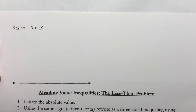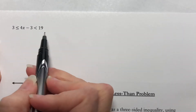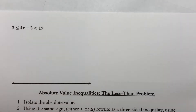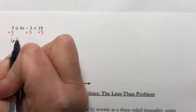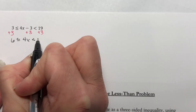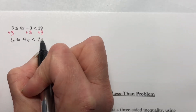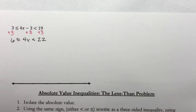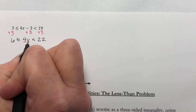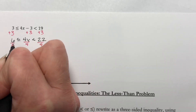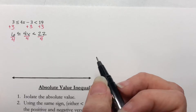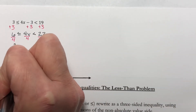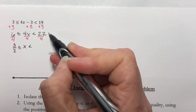3 is less than or equal to 4x minus 3 is less than 19. Notice that our two signs do point in the same direction, but I do have a mixture of them. We want our x alone in the middle, so I am going to add 3 to everything. This gives 6 is less than or equal to 4x is less than 22. Now I want the x alone, so I am going to divide everything by 4. Since 4 is positive, I do not have to flip the signs — if I needed to divide by a negative, I would have to flip both of them. So I get fractions: 6 over 4 is 3 halves, is less than or equal to x, is less than 11 halves.